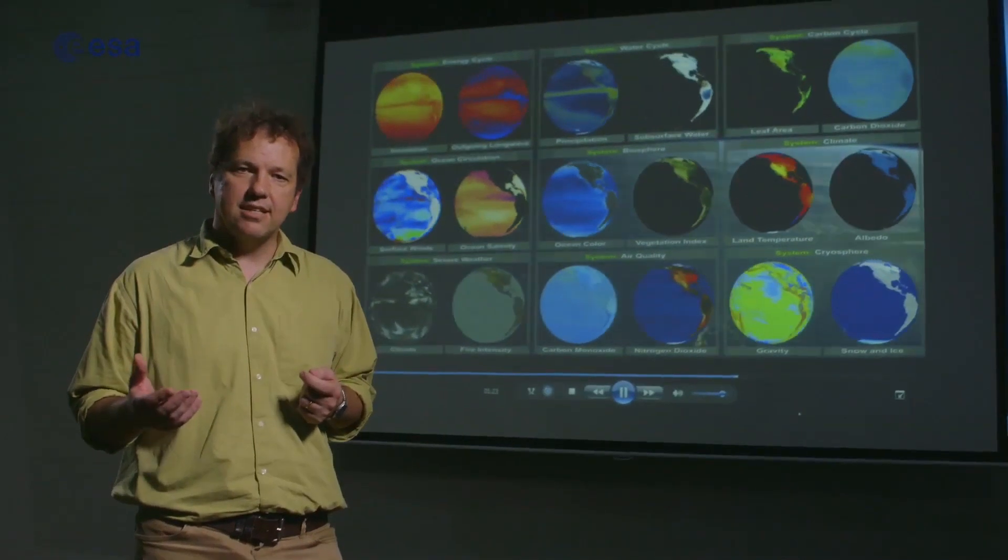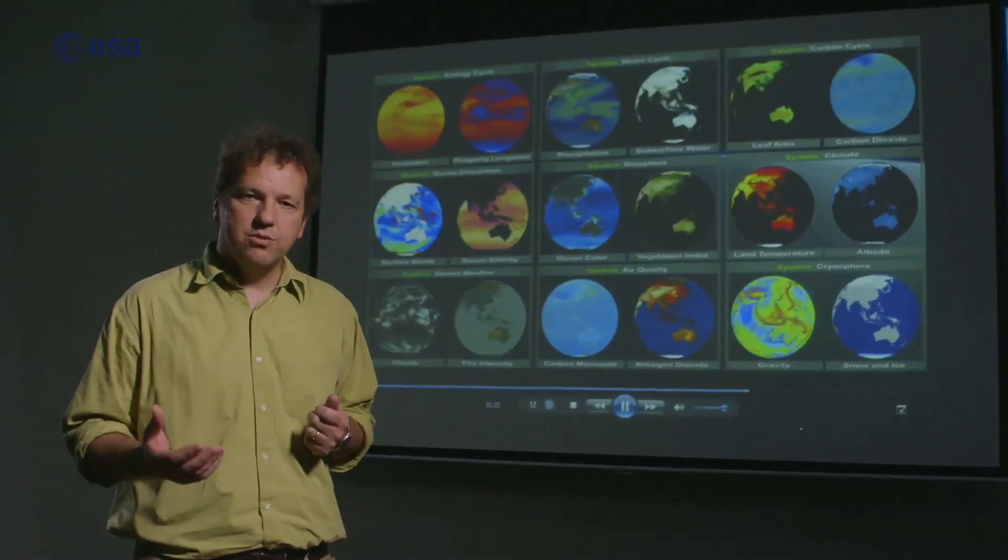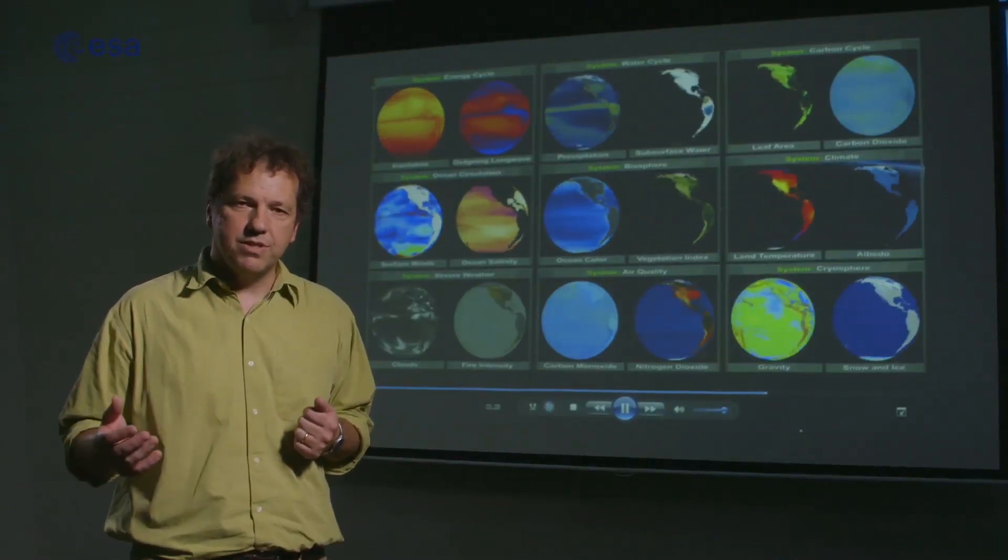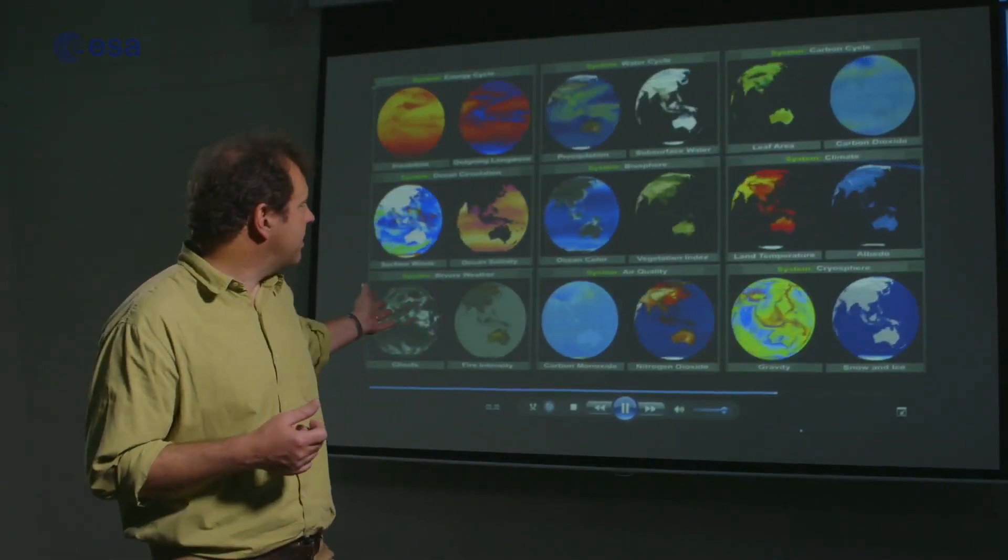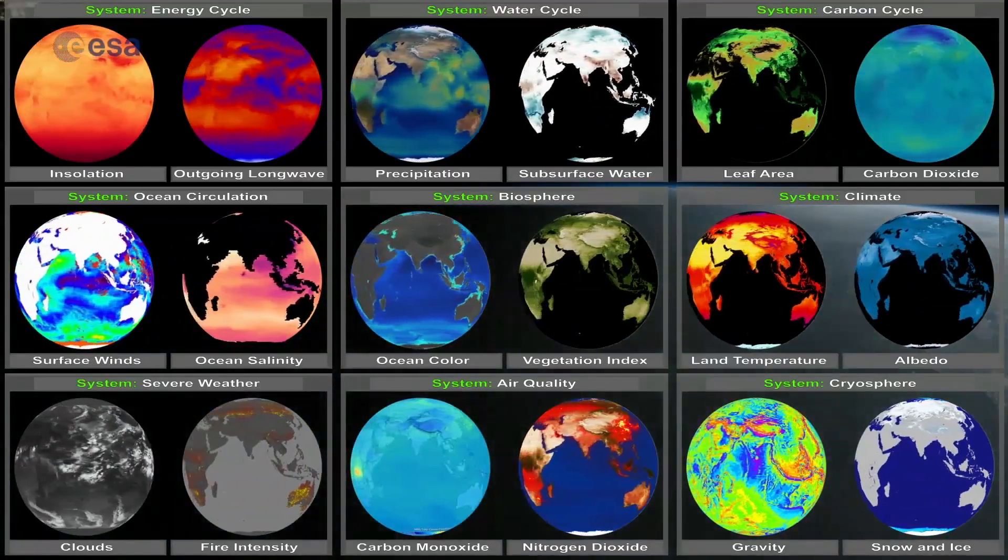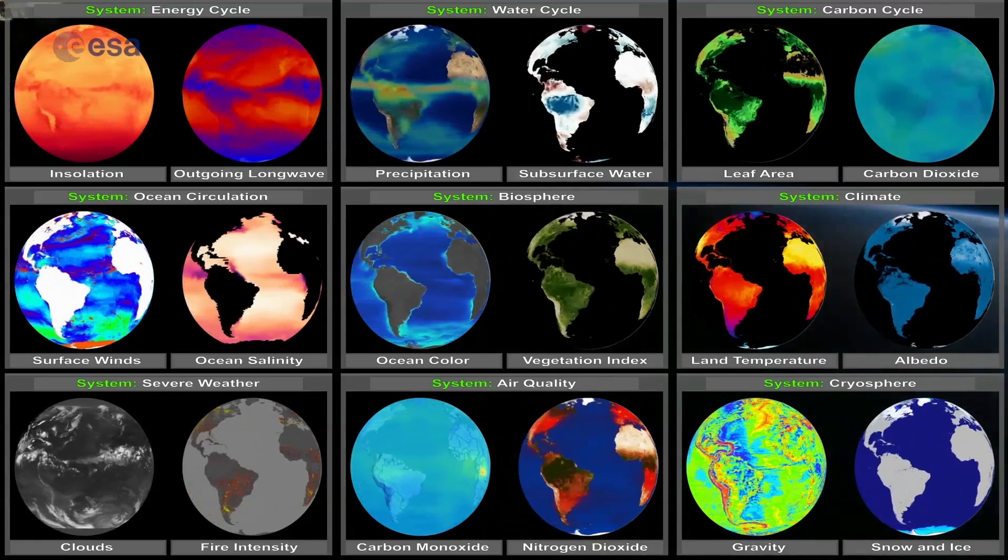Remote sensing from Earth orbiting satellites is one of the only ways we can do that effectively, repetitively and consistently for long periods of time. You can see here the wide range of Earth system properties that can be assessed by remote sensing, and this is only a small number of the true range of parameters that we can observe.